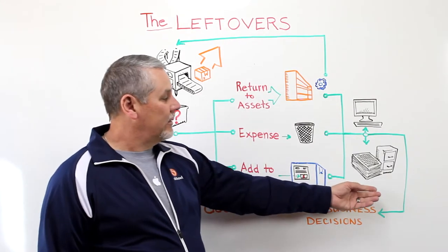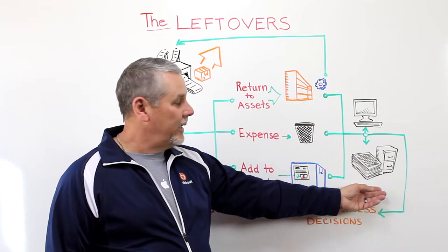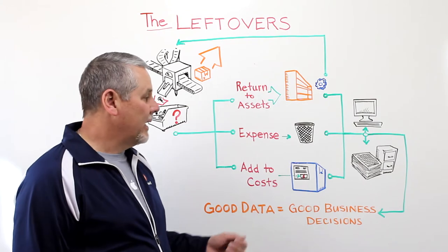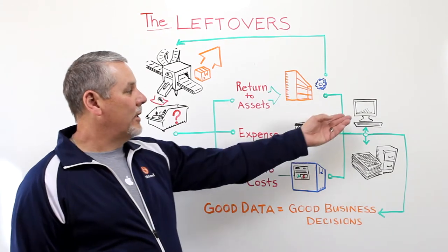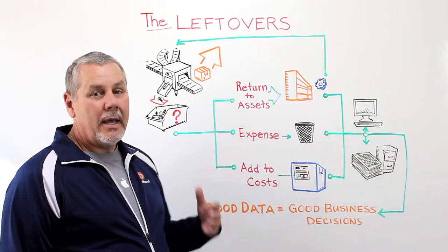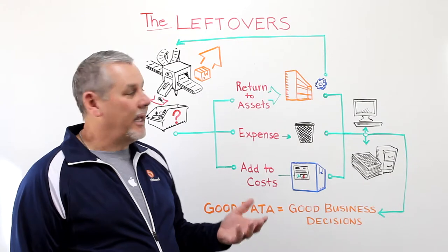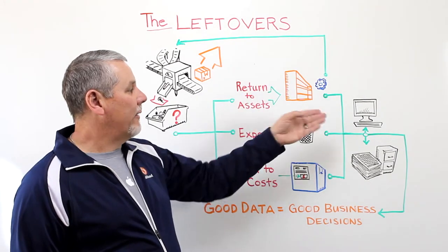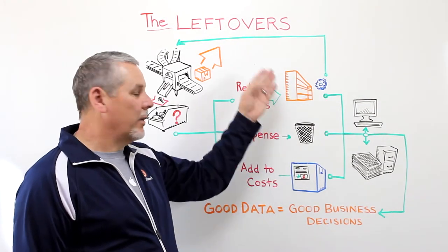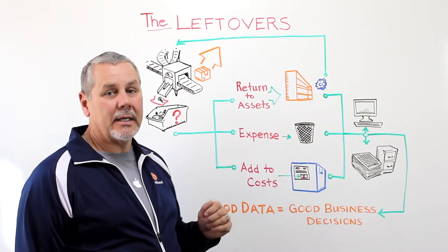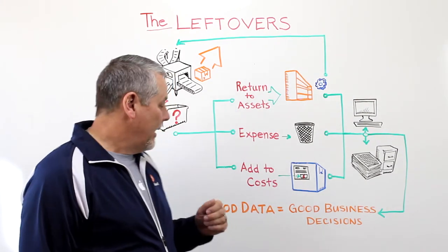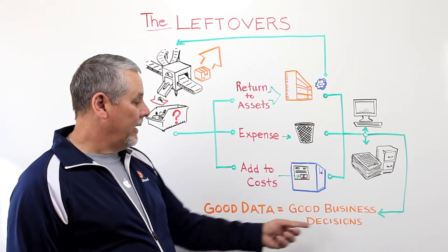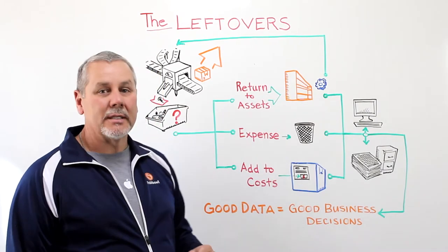If you're doing this manually, obviously there's a chance for a lot of human error and mistakes. With a software solution like Fishbowl, we've reduced those mistakes because it's happening at the time you make that choice. Dynamically, the software is updating what's going on with the inventory, and accounting is getting updated at the same time. With that, you get good data, and with good data, you have the ability to make good business decisions.